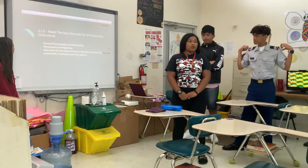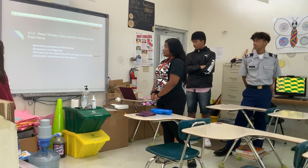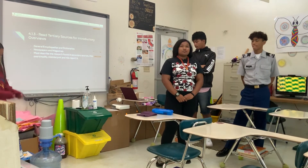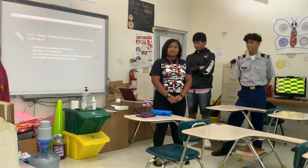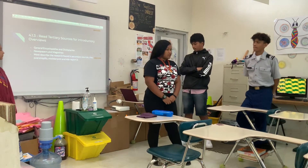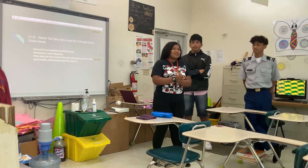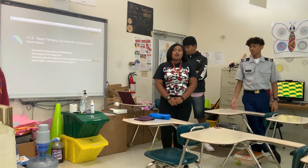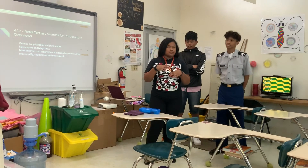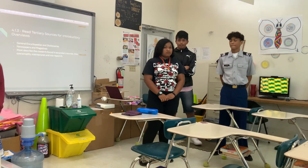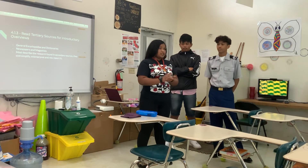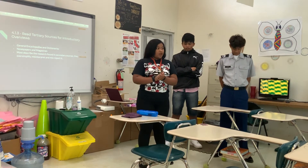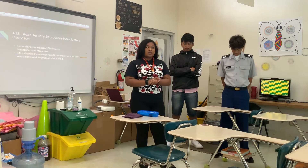My section is 4.1.3, which is to read tertiary sources for introductory overviews. Tertiary sources are based on secondary sources, and are usually for specialists. Examples include encyclopedias, dictionaries, magazines, newspaper articles, and commercial books written for a general audience. But you want to be cautious when using data from magazines, newspaper articles, and tertiary sources from the web, because some researchers say the data found can be reliable, but it can also be oversimplified or misinterpreted.